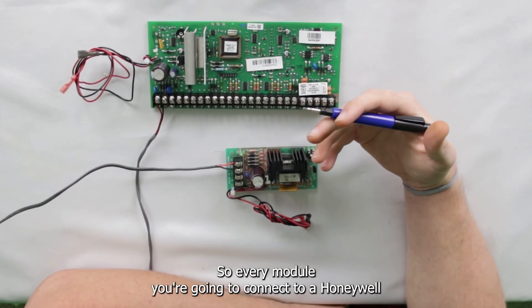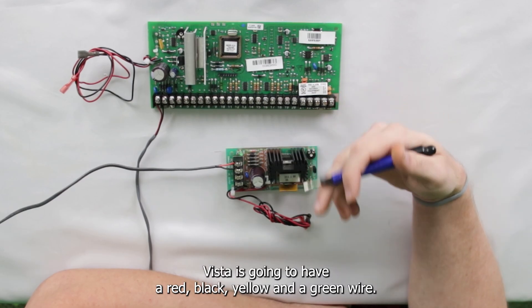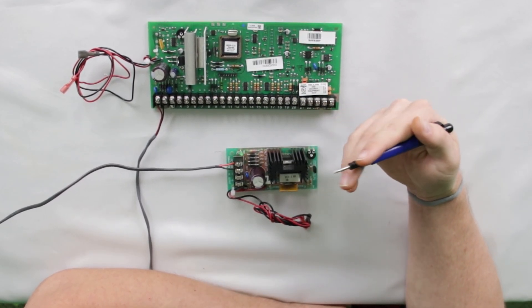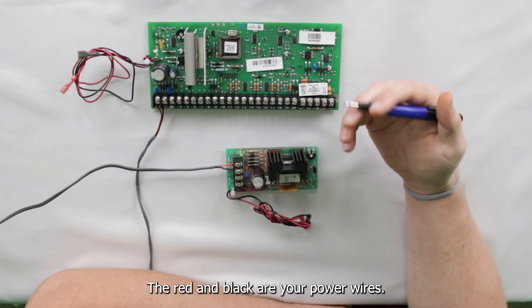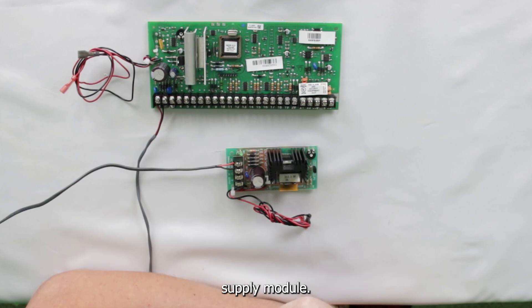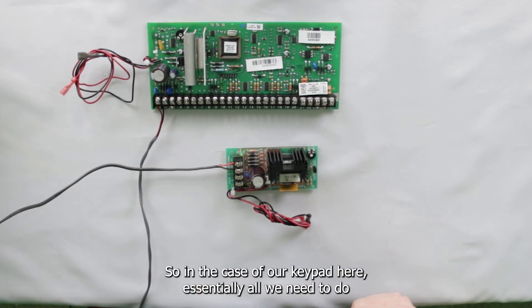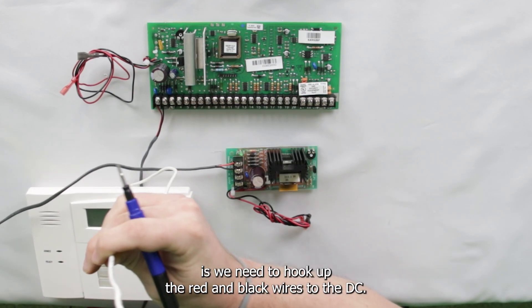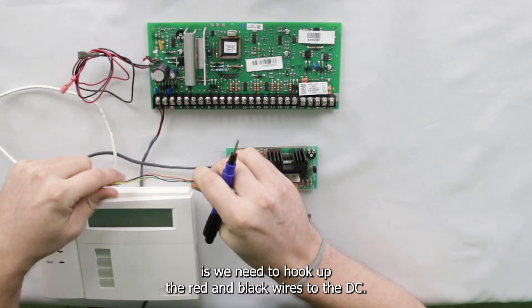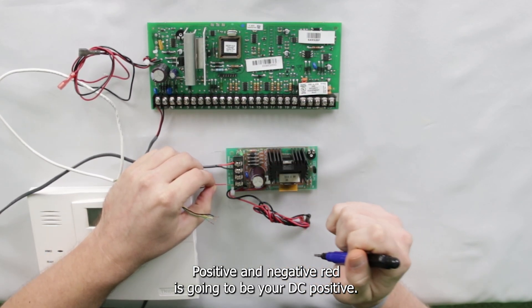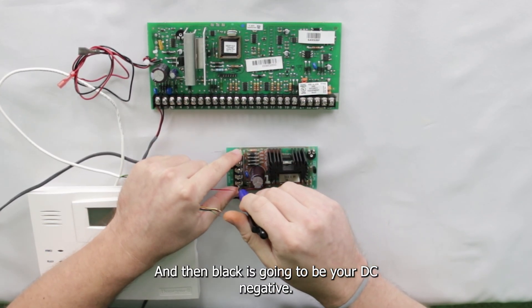So every module you're going to connect to a Honeywell Vista is going to have a red, black, yellow, and a green wire. The red and black are your power wires. So what you do, you just transfer the red and black from the system over to this power supply module. So in the case of our keypad here, essentially all we need to do is hook up the red and black wires to the DC positive and negative. Red is going to be your DC positive, and then black is going to be your DC negative.